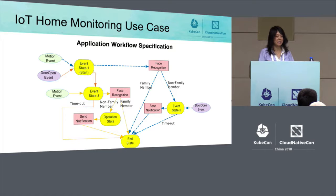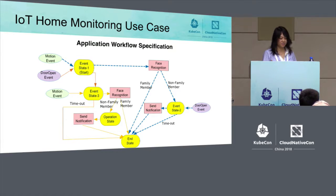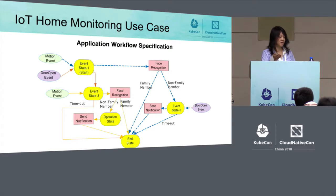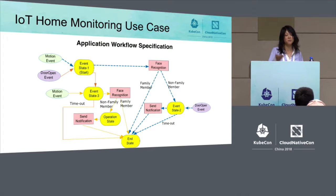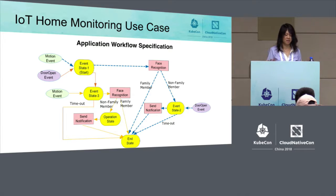This slide shows a use case — a workflow specification for a burglary detection application. This application workflow starts with an event state, and this workflow can be triggered by either of two events: a motion event or a door open event. When any one of these two events occurs, the workflow will trigger the face recognition function to run. That function could produce two results: if the result is a family member, meaning it's not a burglary, the workflow will transit to the end state.